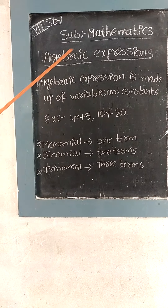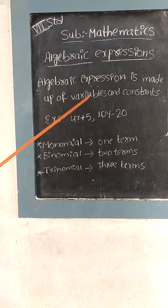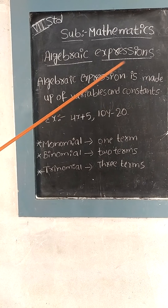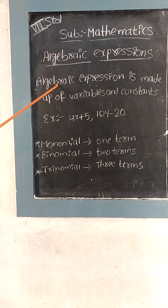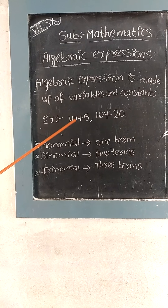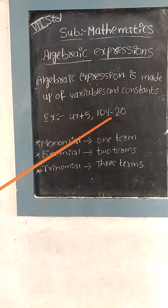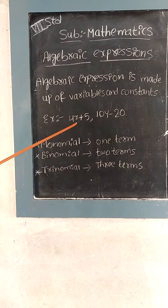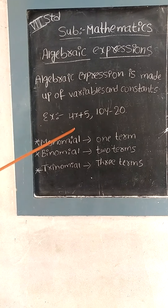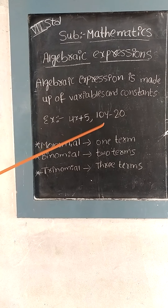What do you mean by algebraic expressions? These algebraic expressions are made up of variables and constants. They come together to form an algebraic expression. For example, 4x plus 5, or 10y minus 20. Here x is a variable and 5 is a constant. Similarly, y is a variable and 20 is a constant.